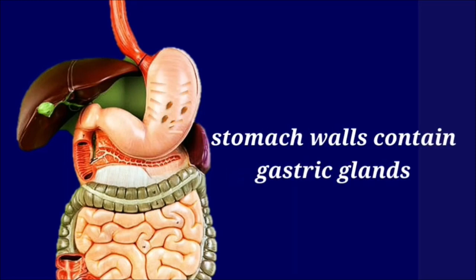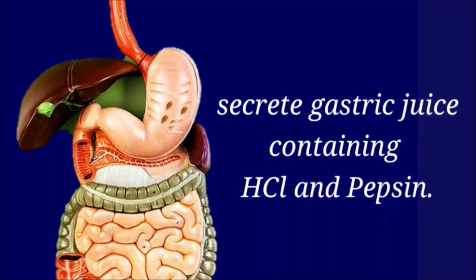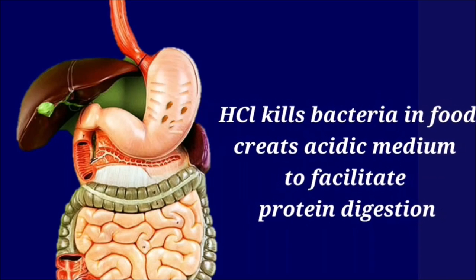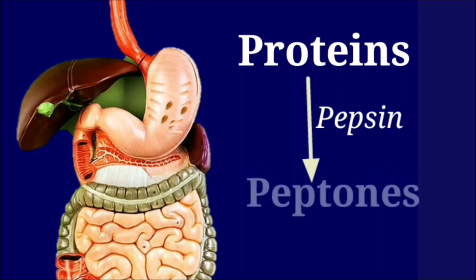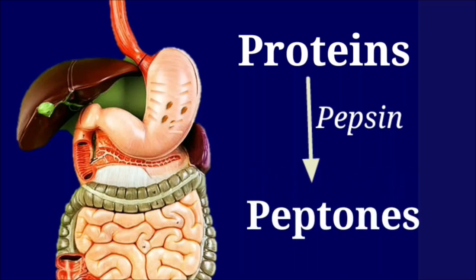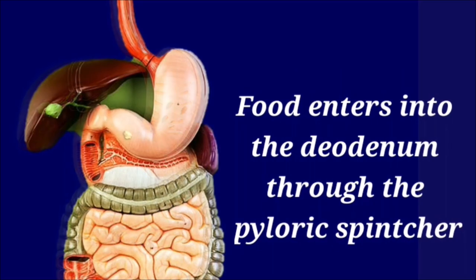The stomach walls contain gastric glands which secrete gastric juice containing hydrochloric acid and an enzyme called pepsin. Hydrochloric acid kills bacteria and creates an acidic medium to facilitate protein digestion. The enzyme action of pepsin converts proteins into peptide chains, or peptones.